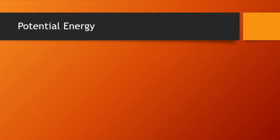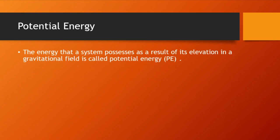Potential energy is the energy that a system possesses as a result of its elevation in a gravitational field. It is denoted by the formula: potential energy equals mass times gravity g times elevation z.